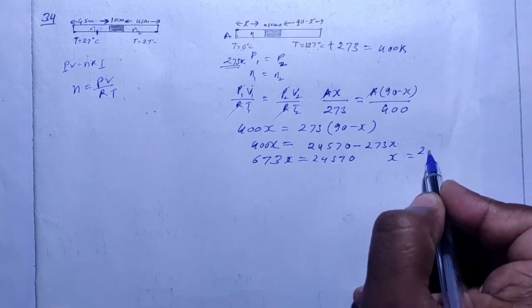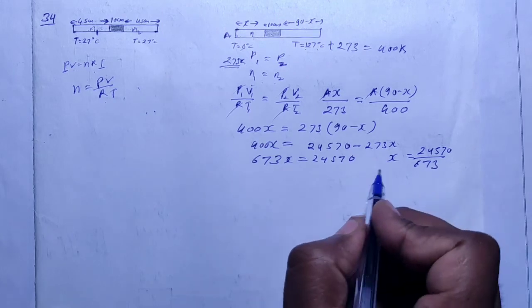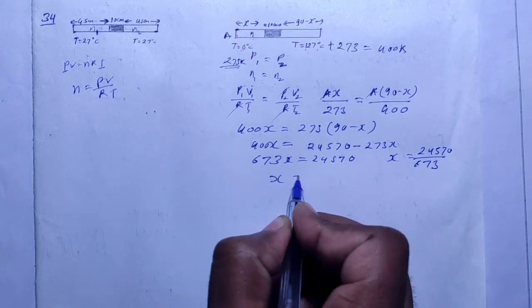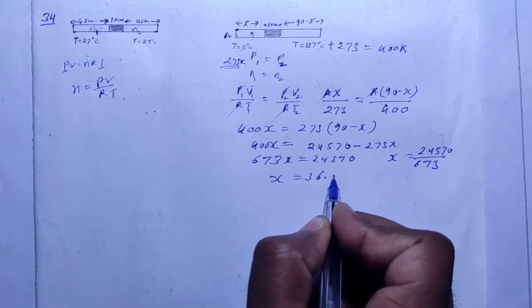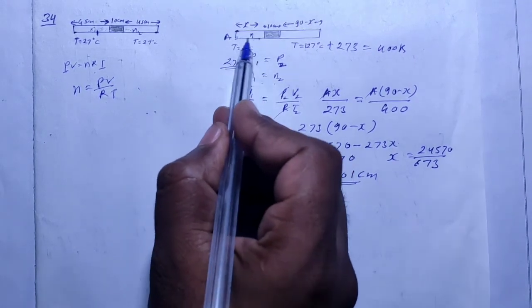X equals what? 24,570 divided by 673, okay? If you solve this, then you will have the value of X. How much? 36.501 cm, right? So this is the length of our cooler side.